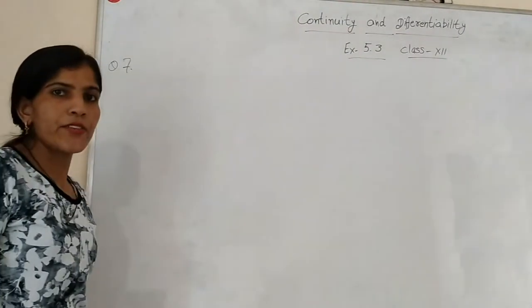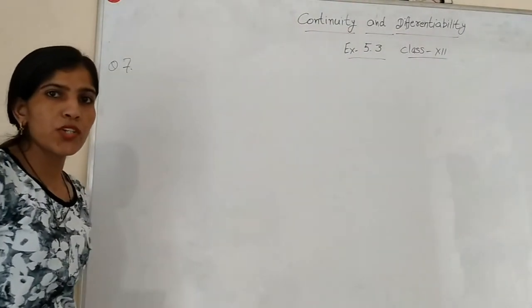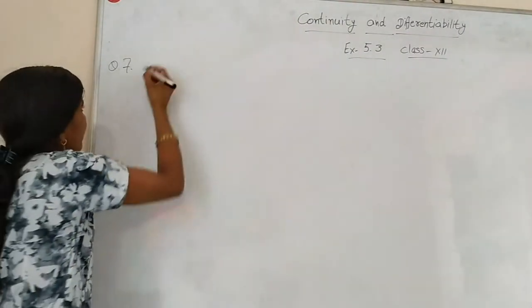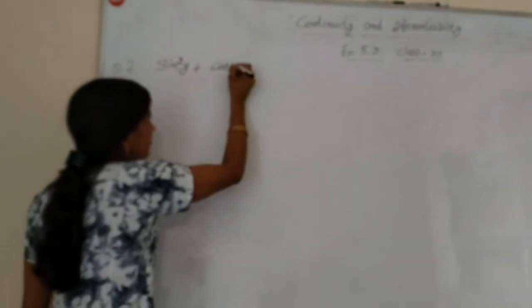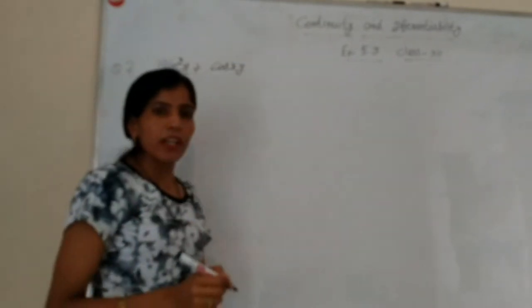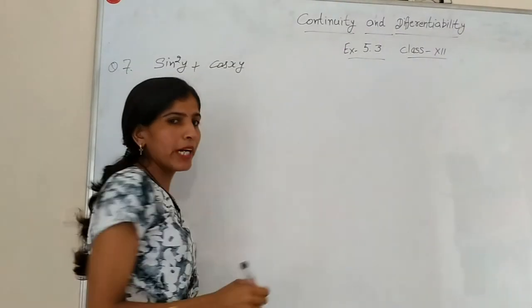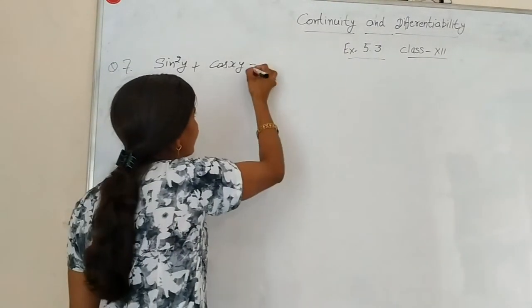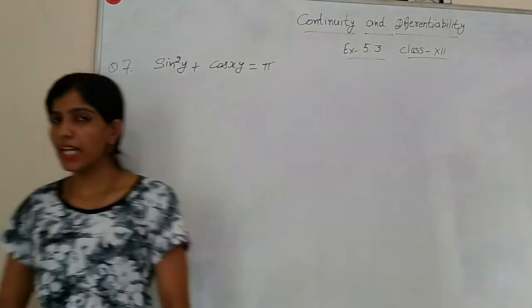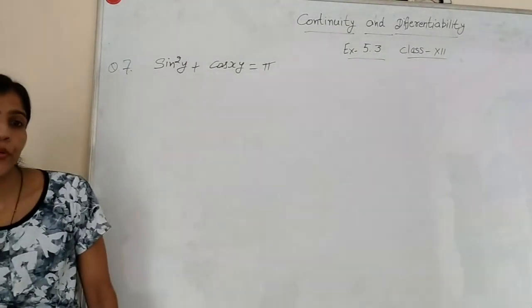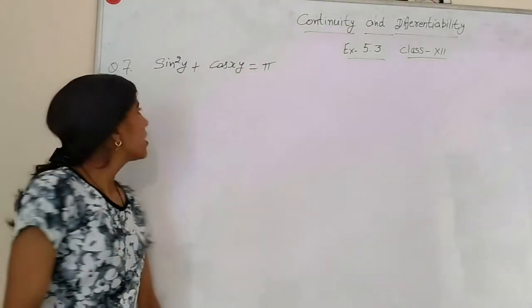Question 7: sin²y + cos(xy) = π. Here π is a constant number, and the derivative of a constant is 0.